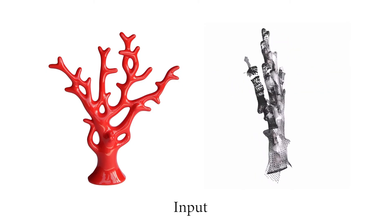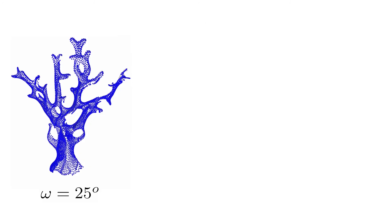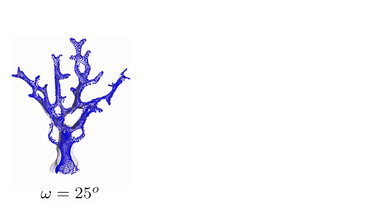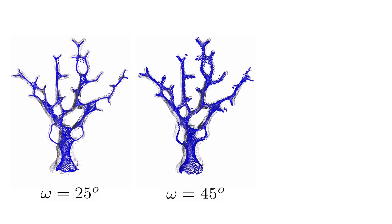The parameter omega controls how deep the inner points can sink into the volume of the shape. Since the inner points settle sooner under smaller values for omega, the mesoskeleton follows the surface details more closely, but is also more sensitive to noise.